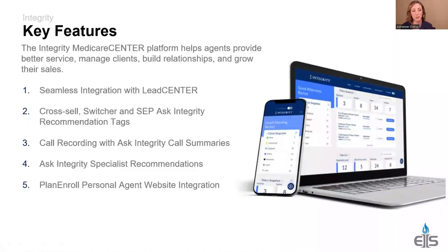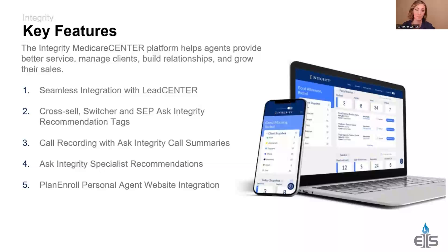There are also cross-sell, switcher, and SEP Ask Integrity tags. Once you're in contacts, the platform will recommend — based on the MA plan — to cross-sell a cancer plan or hospital indemnity plan. It will also tag clients as potential switchers. Integrity partnered with data research to determine, based on what plan they have or how long they've been with you, whether they're a potential client to switch. Those are your higher-priority clients to see first thing in AEP.